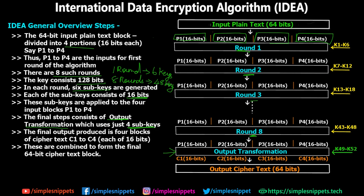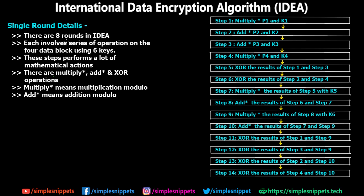Now that you have an overview: the input text is 64 bits, divided into four 16-bit blocks, 8 rounds are performed, then one output transformation process, and then we get the ciphertext. Let's move to the round detail. On the left you have theory about a single round and on the right the diagram shows the 14 steps that happen in one single round.